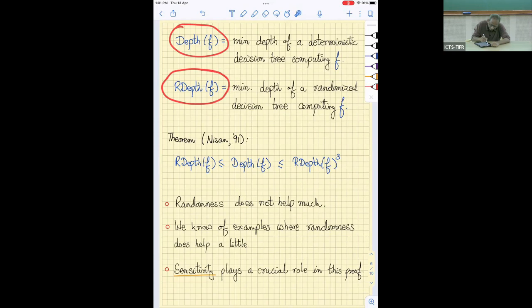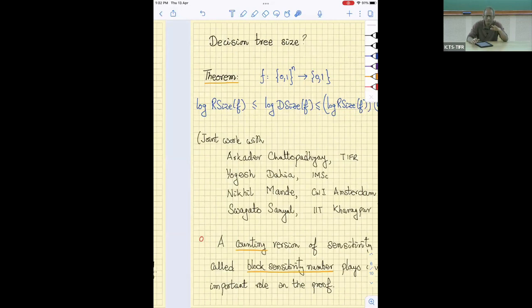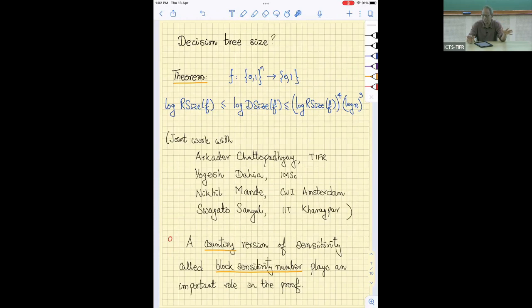So we have talked about the best depth of a deterministic decision tree, the best depth of a randomized decision tree. One would expect randomization helps. But there was a very interesting, important result in the 1990s, due to Nissan, which showed that actually, randomization doesn't help too much. Randomized depth may be smaller than deterministic depth, but deterministic depth is at most cube of the randomized depth. It turns out that what controls the complexity of a function is essentially its sensitivity.